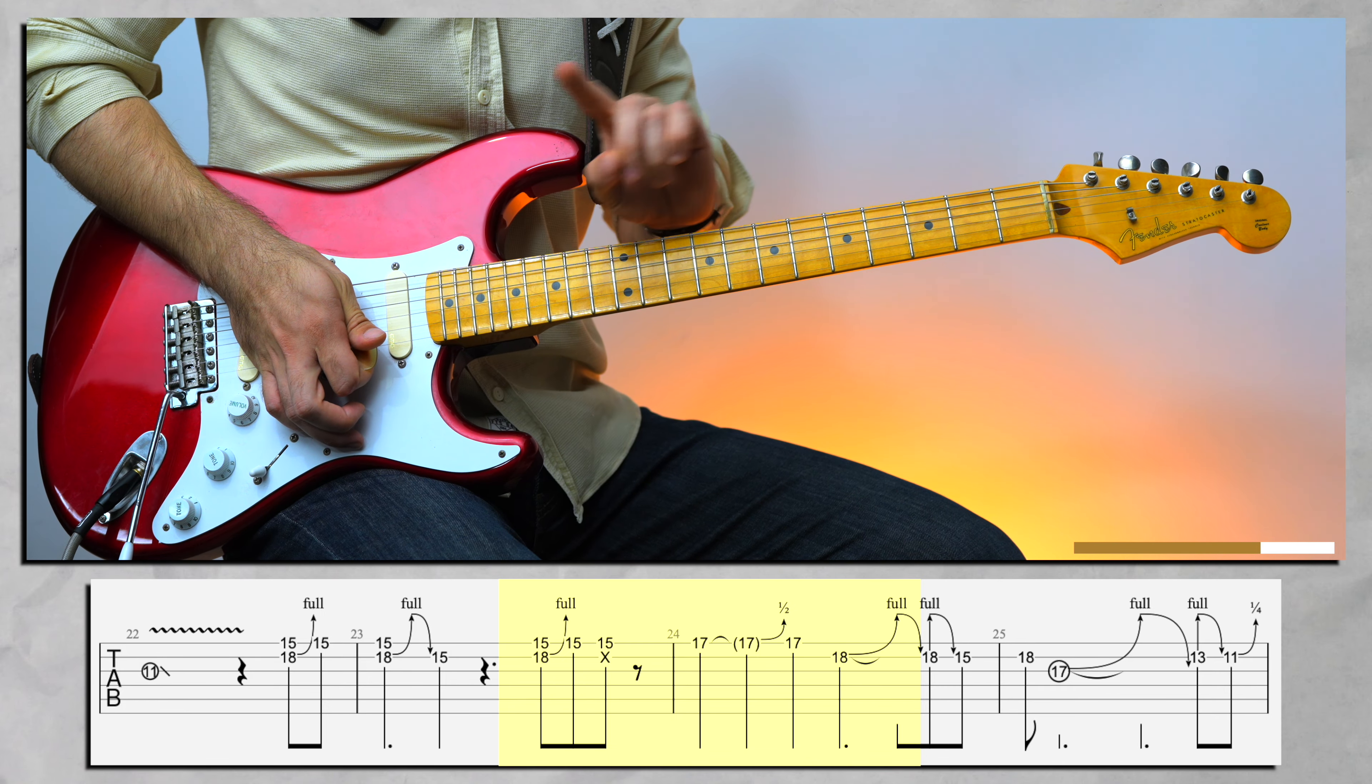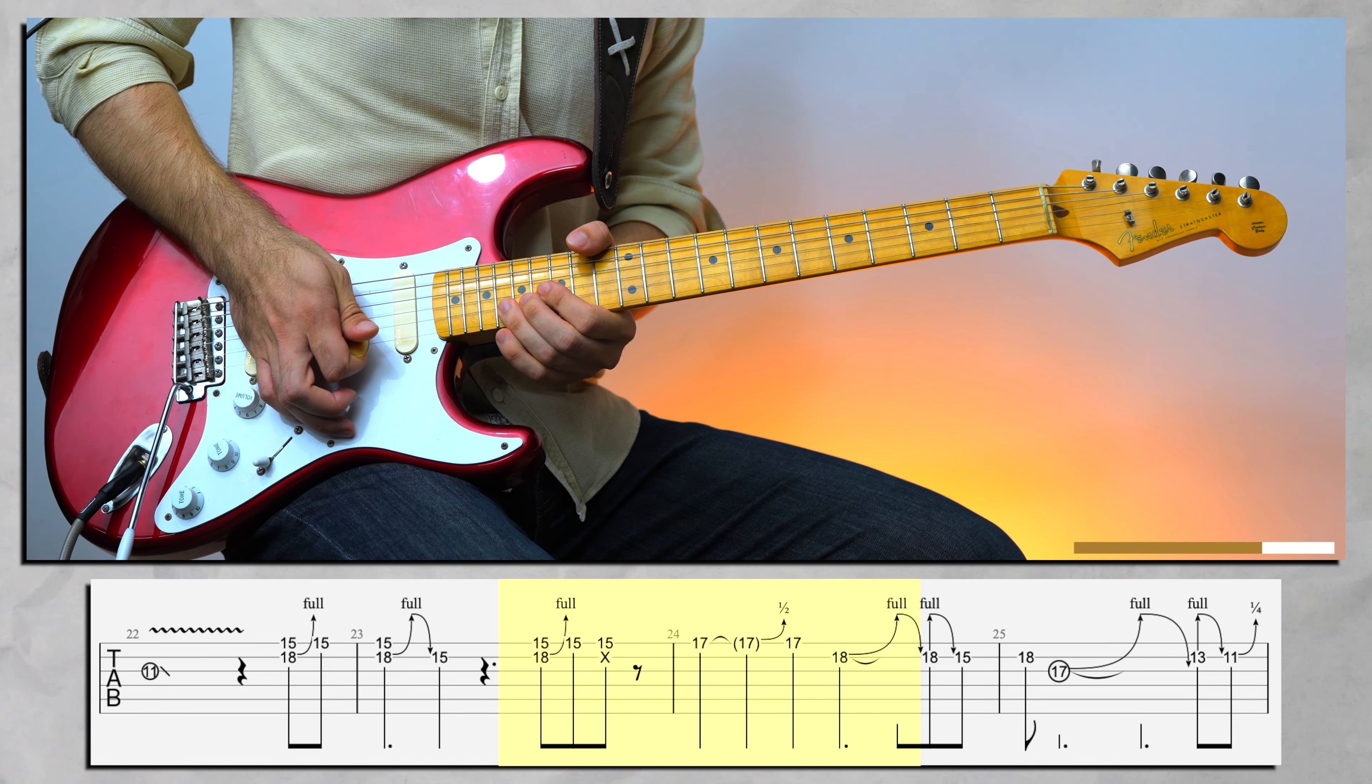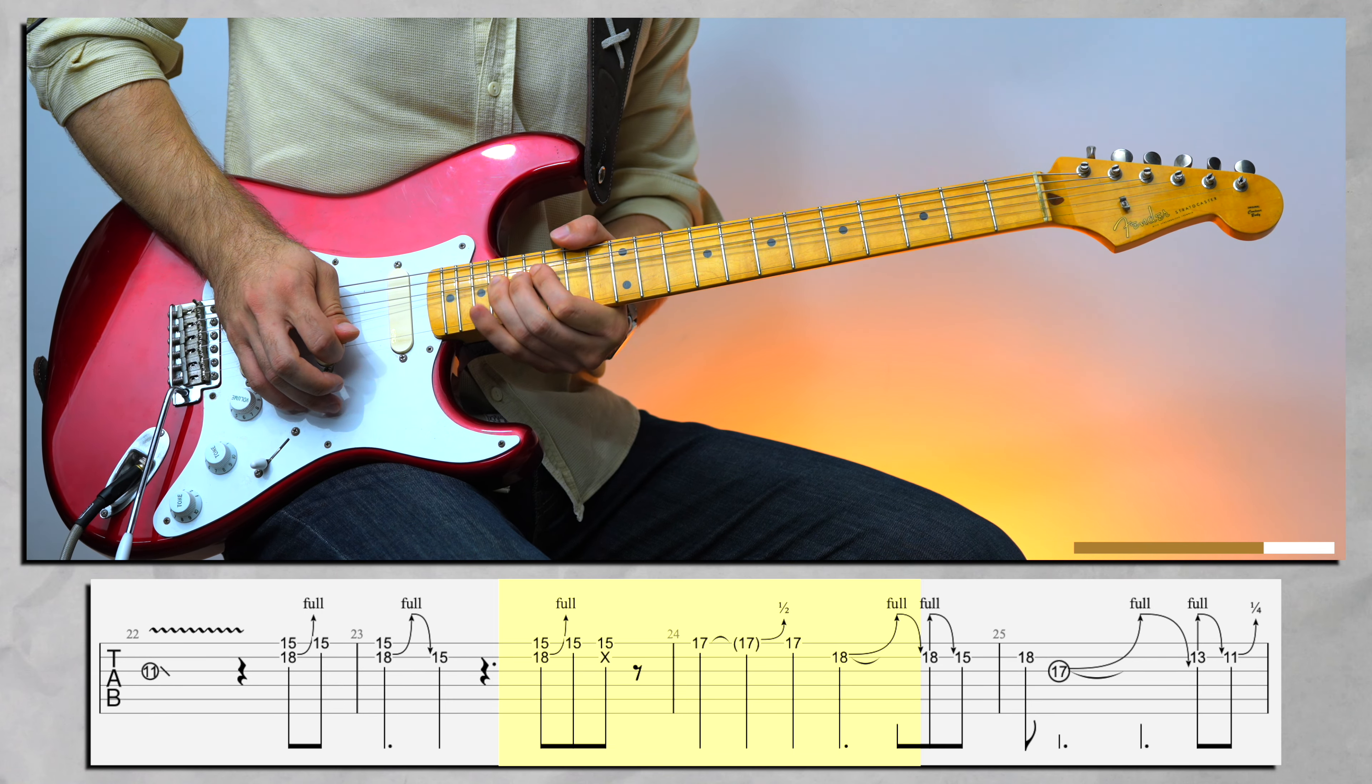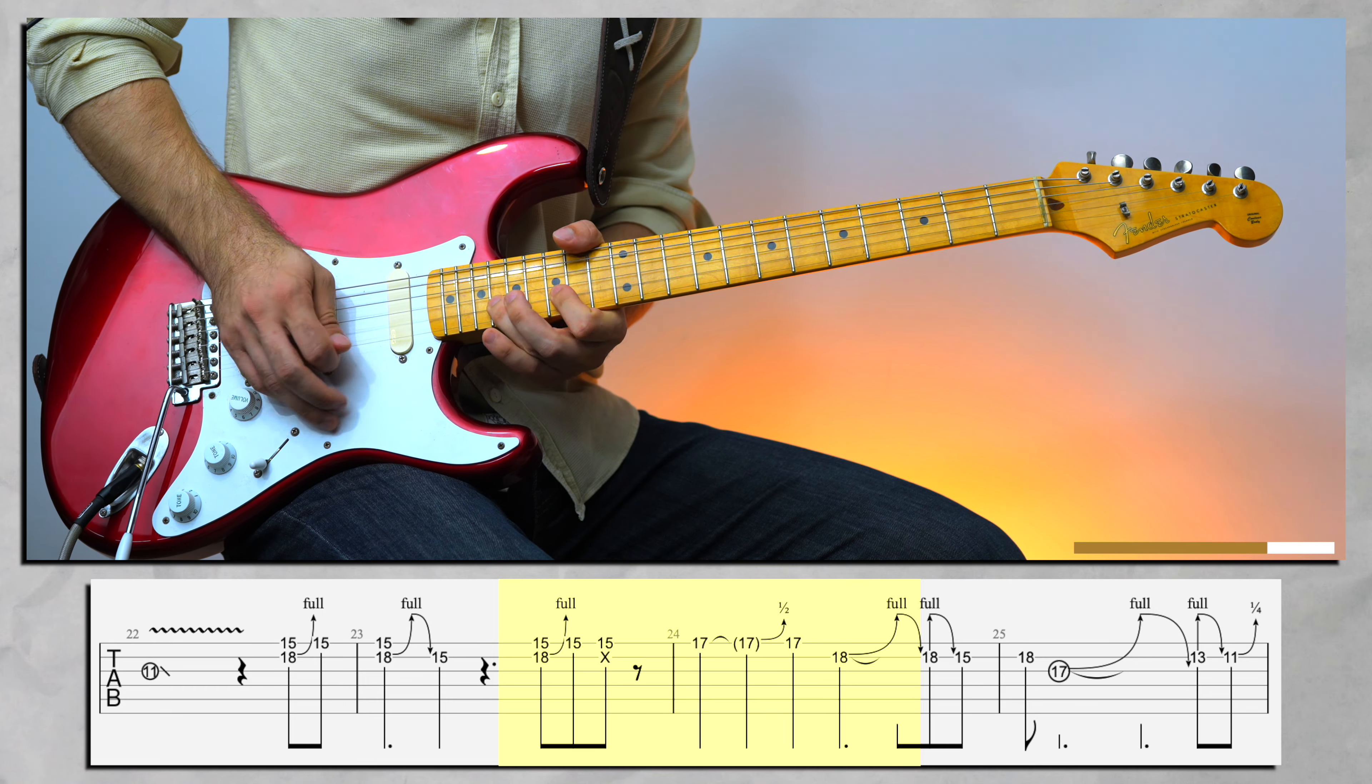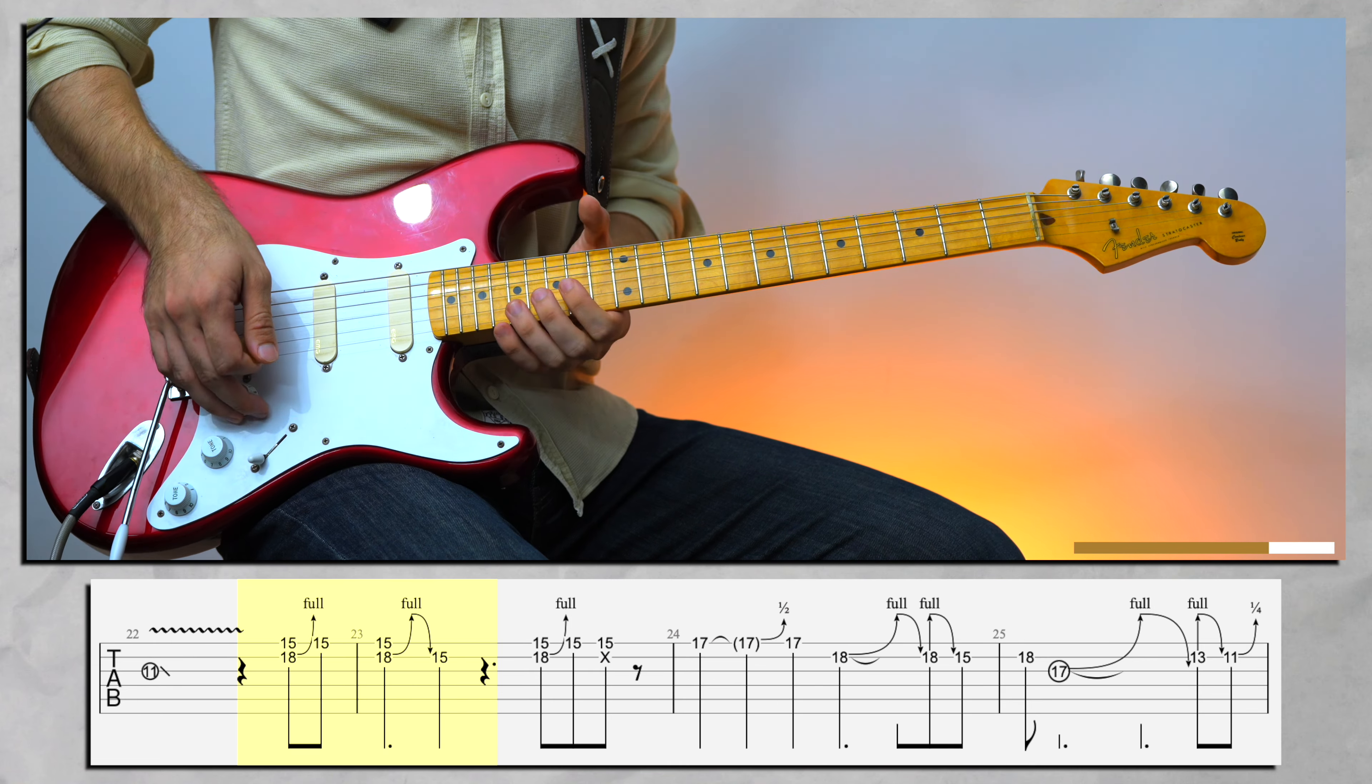These are called unison bends and on Shine on a Crazy Diamond you hear these. You hear these, you know. By the way that vibrato, it's not like this, it's a very distinctive bend.